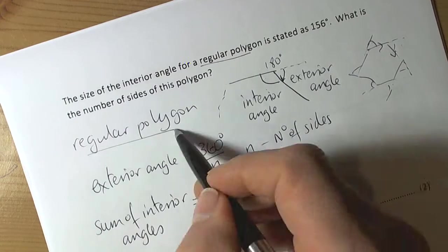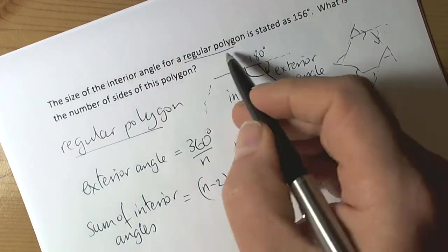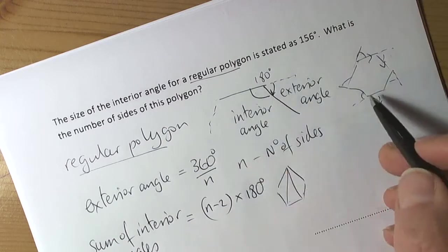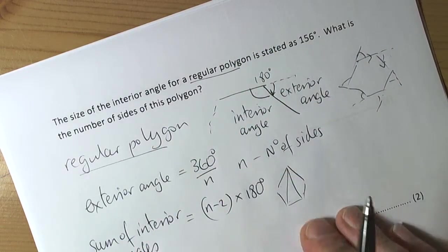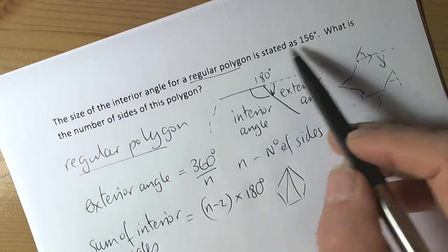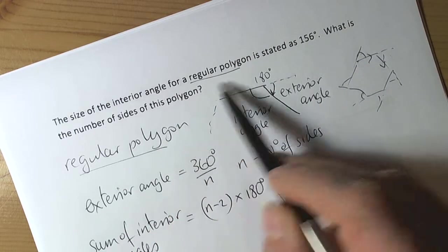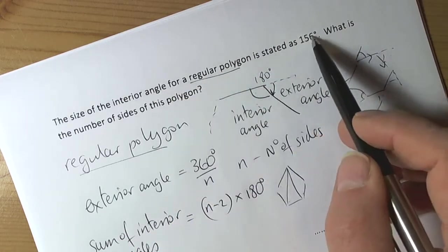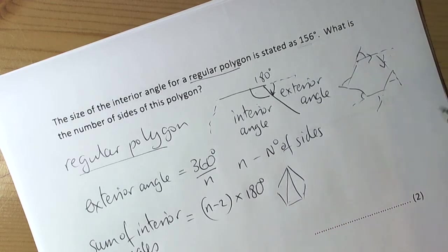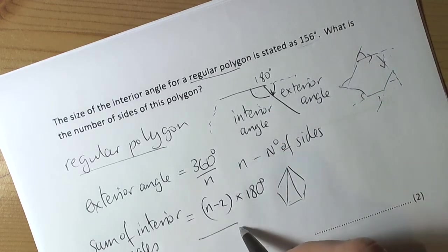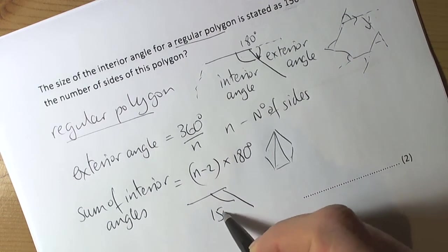that we need to remember about regular polygons. As soon as an exam question says regular polygons, we should be writing those down—it gives us a prompt. Then we use the information to find the answer we need. What do we have? They're telling us to work out the number of sides, and they're telling us the interior angle is 156°. So on this polygon, I've got 156 degrees there.